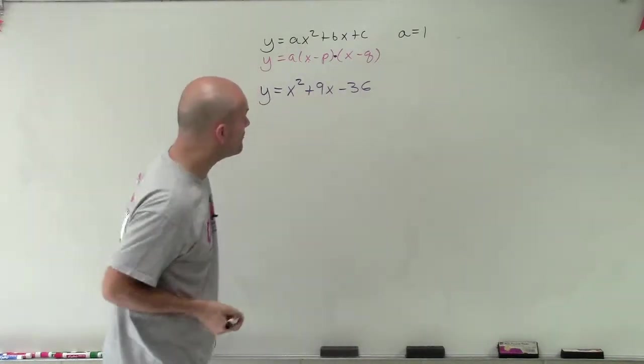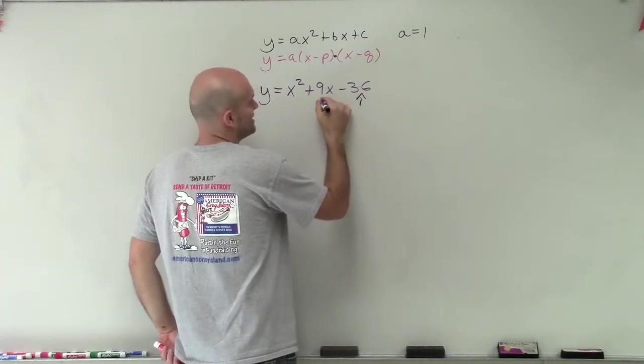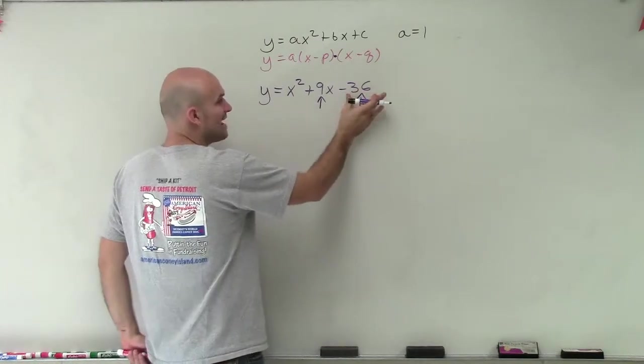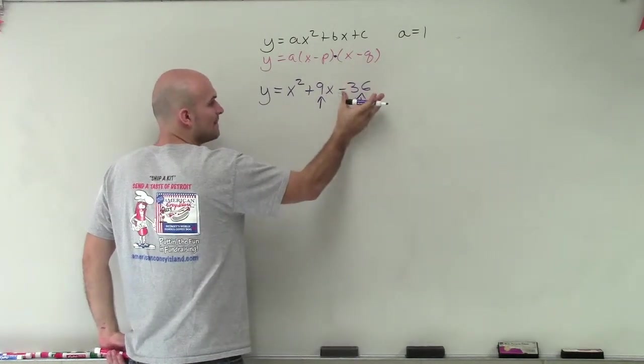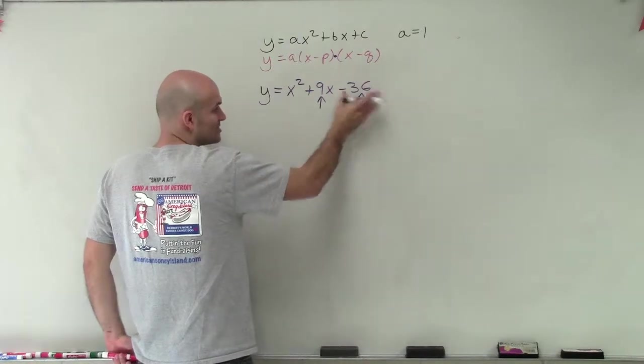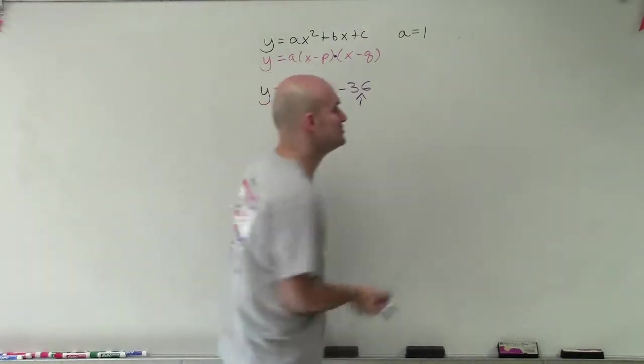So far we've noticed using both techniques we need to figure out: what are the factors of negative 36 that multiply to negative 36 (hence why we call them factors) but then add to 9?